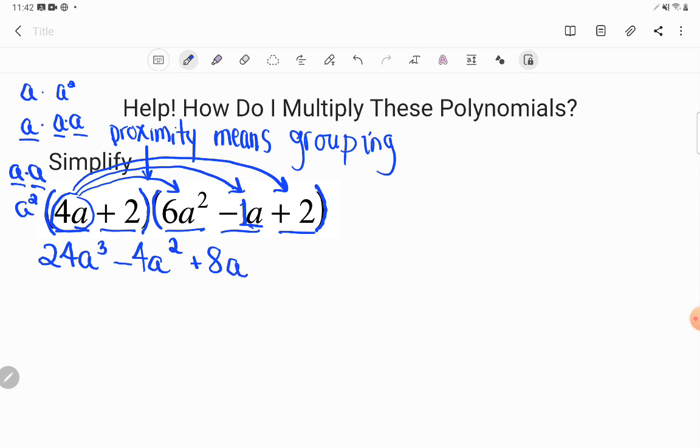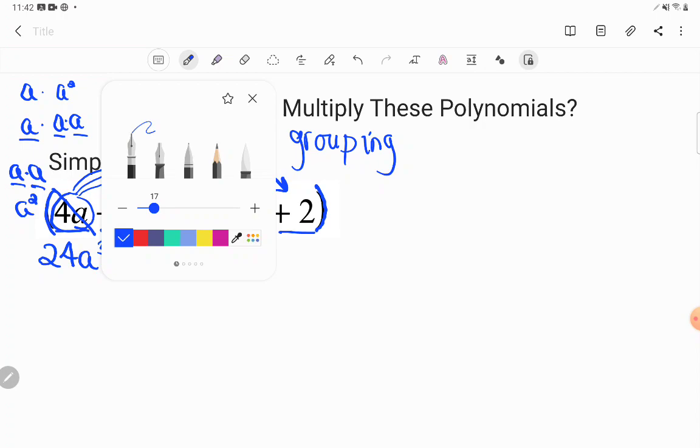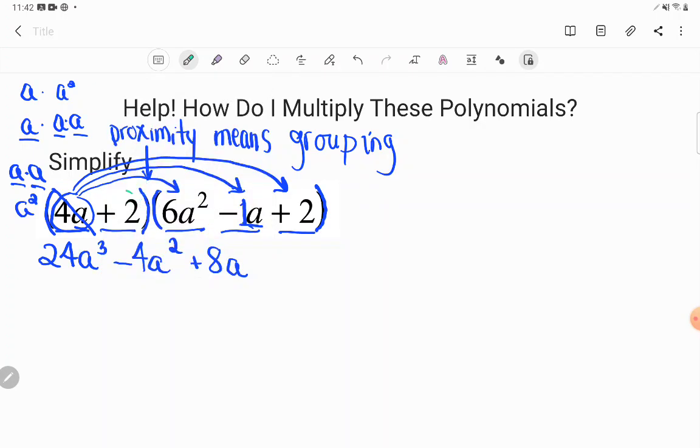So we passed out the first term in the first grouping to every term in the second grouping, but we haven't dealt with the second term yet. So let's do that. Positive 2 is what we'll pass out now. So positive 2 times 6a squared. Positive 2 times positive 6 is positive 12, and I just see the 1a squared there, so I'll still have an a squared.